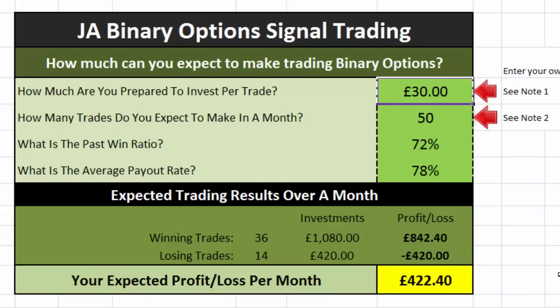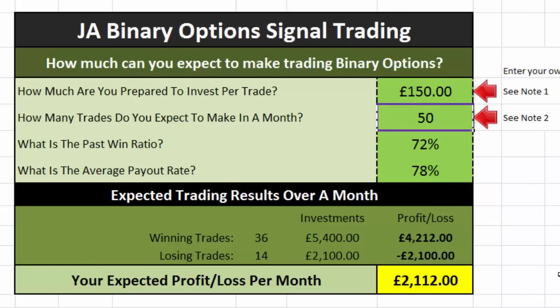I trade with £150 at a time, so I'm looking at making just over £2,000 a month, which is the sort of figure I'm certainly interested in making because I do this full time. I work from home, so those are the sort of incomes I need to make because I don't have a job — I am self-employed.